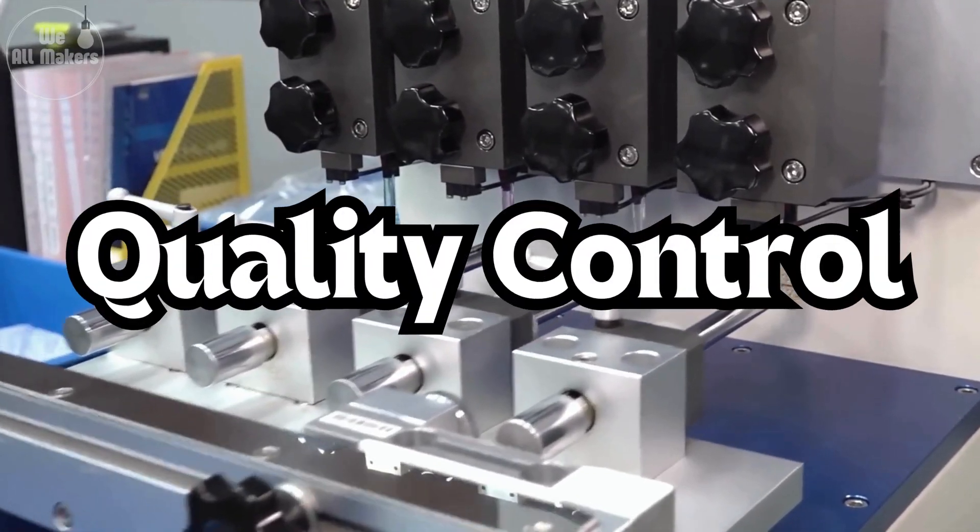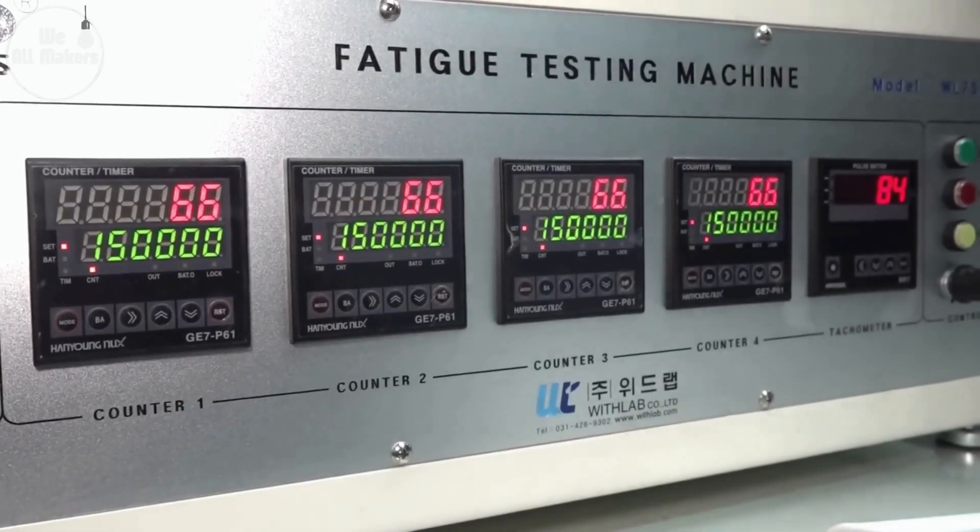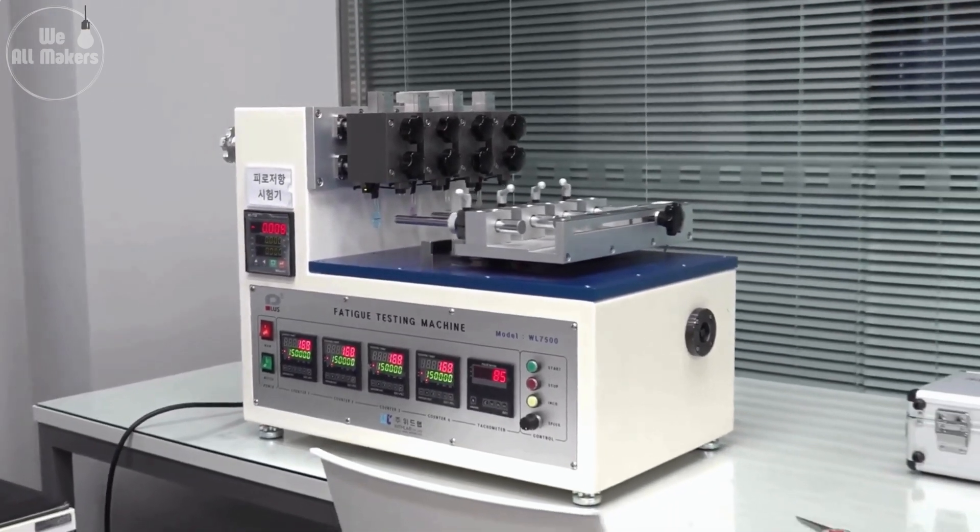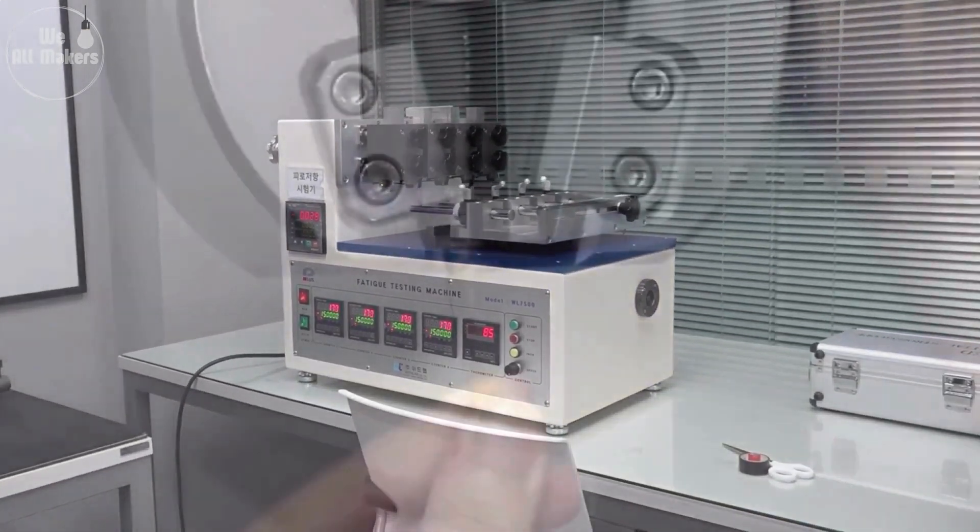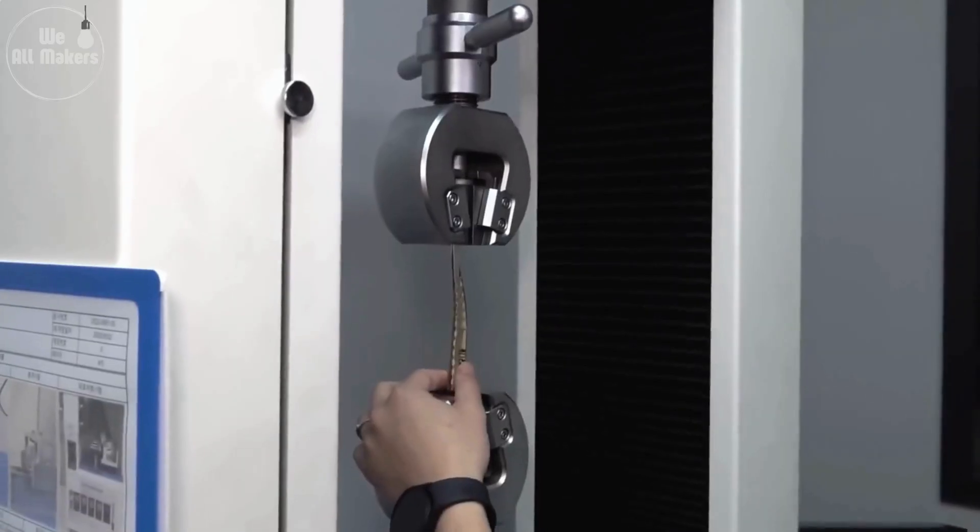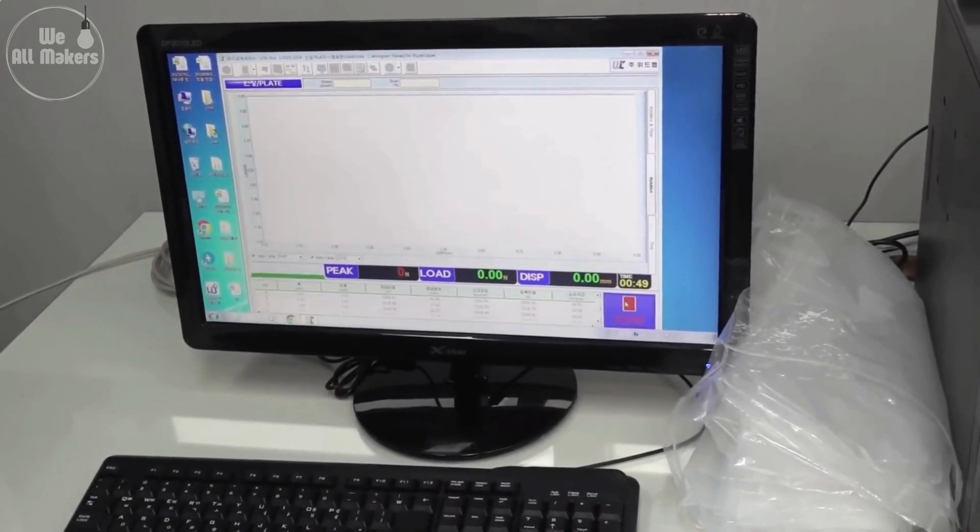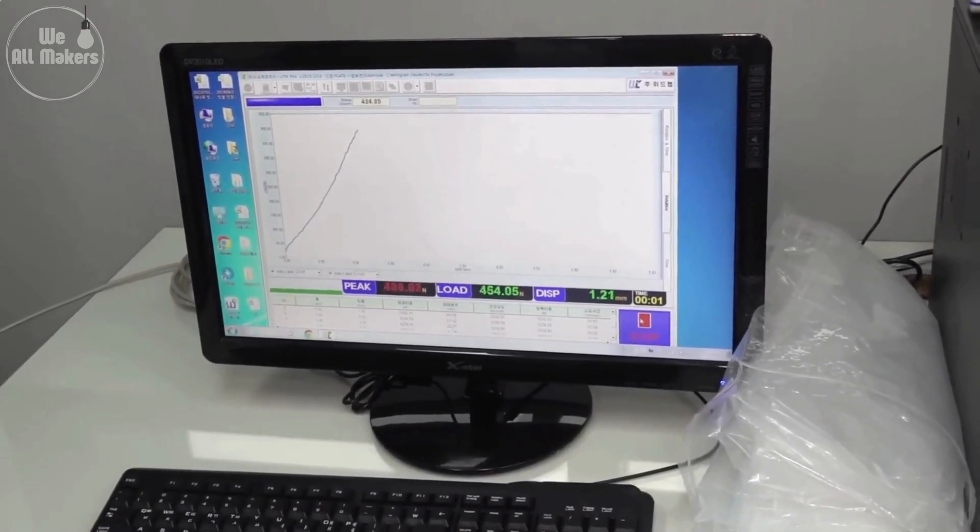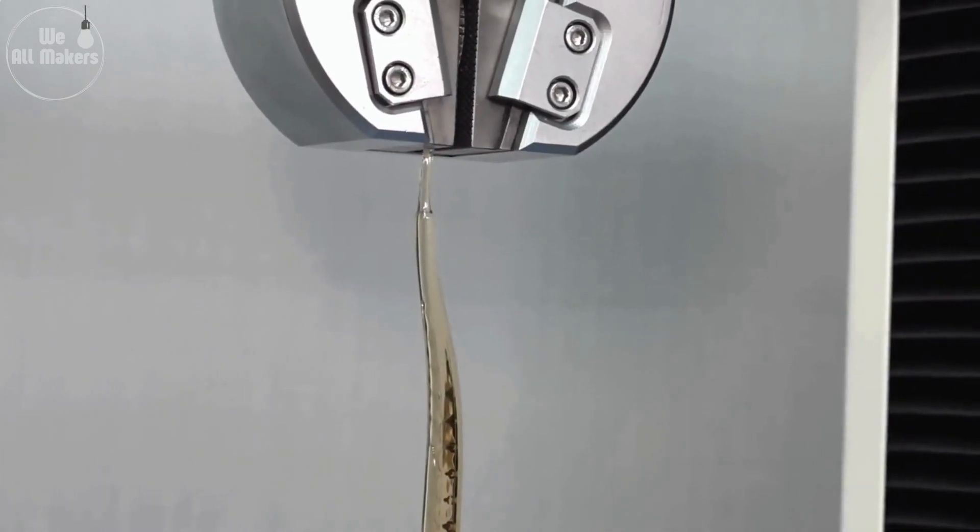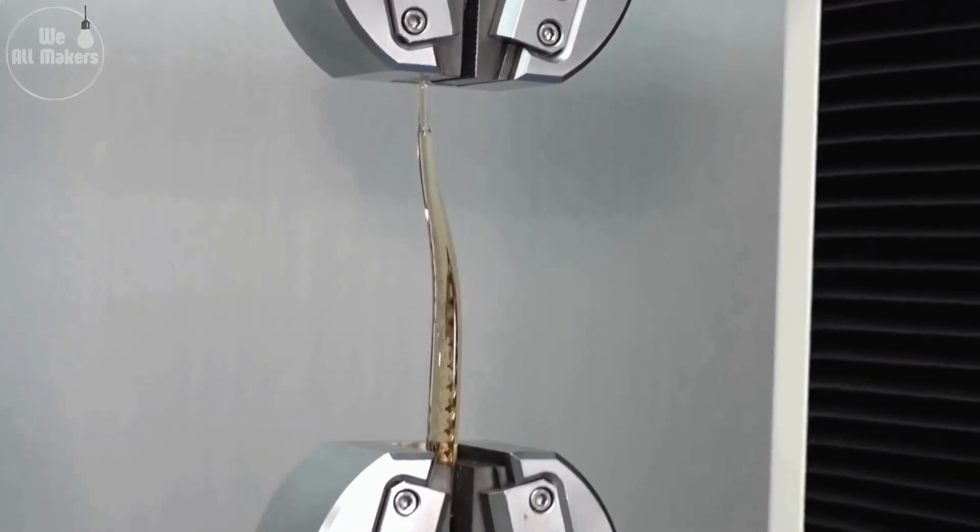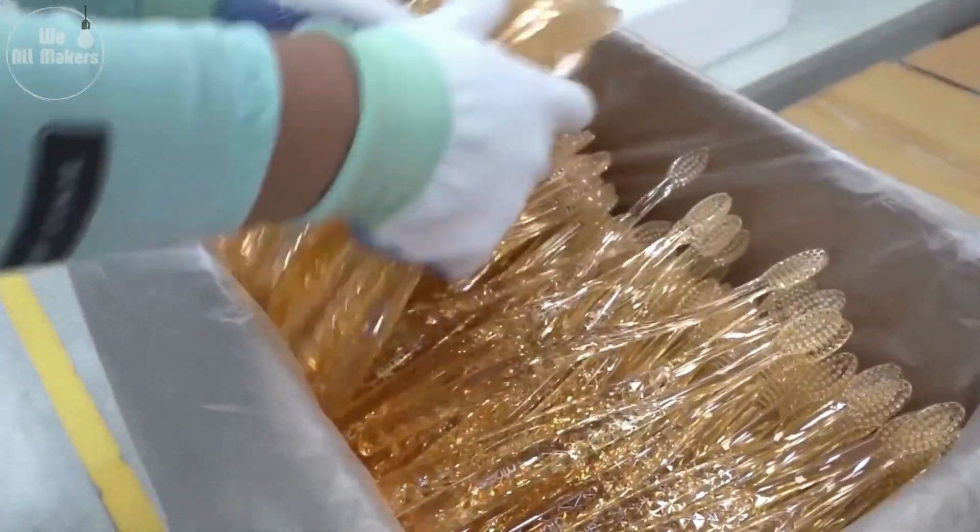Step 7: Quality Control. Before the toothbrushes are packed up, they go through strict quality checks. This is where any problems are caught, ensuring that only the best toothbrushes make it to the store. They check everything from how strong the handle is to how well the bristles stay in place. It's like giving the toothbrushes a final test drive before they hit the road.